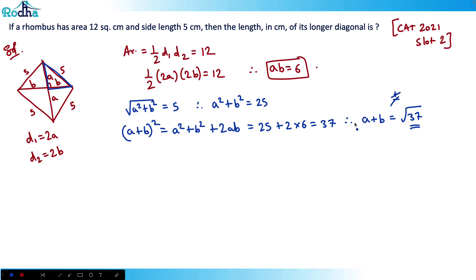Now you want to calculate the other diagonal. You want to also calculate A minus B. This is A plus B here, so this is the length of one diagonal. A plus B is root 37. I want to calculate the length of 2A, so I also need to find A minus B.